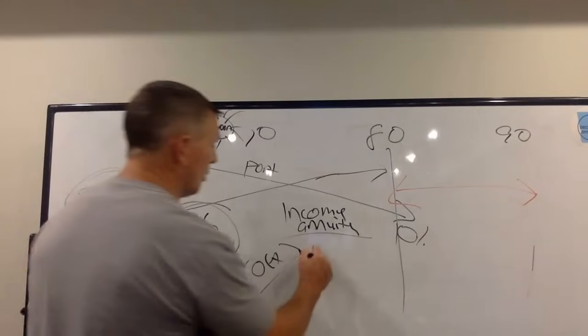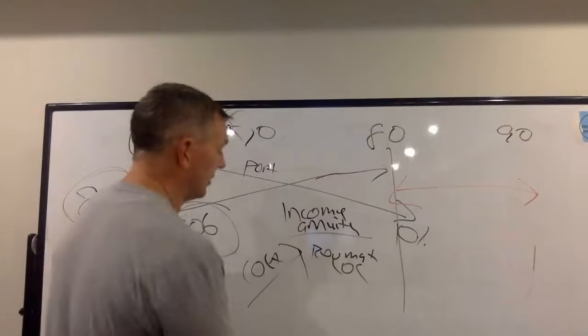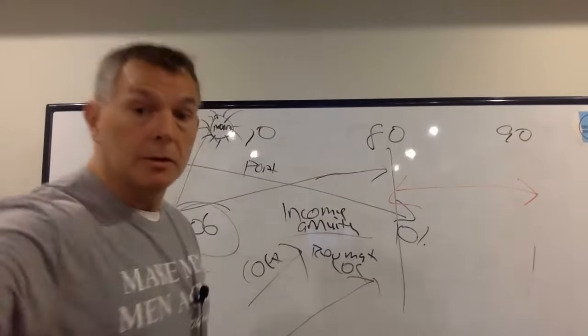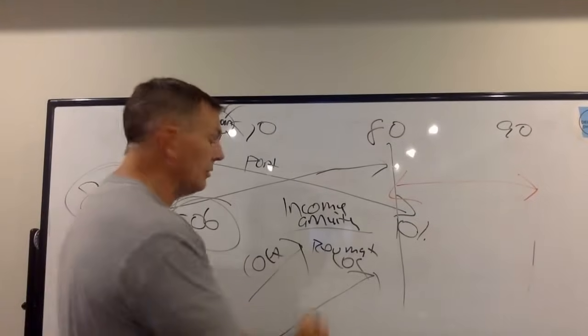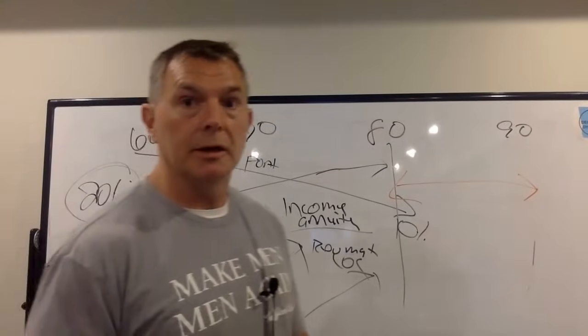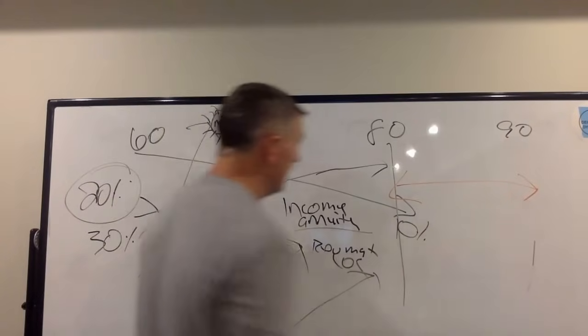Another thing I talked about yesterday is a reverse mortgage line of credit. That is a growing line of credit each and every year until you either sell the house or die. Doesn't mean you have to use it, you can carry zero balance on there.